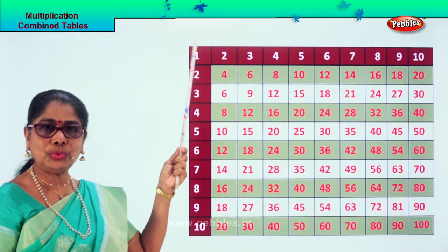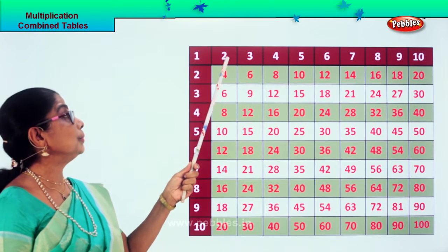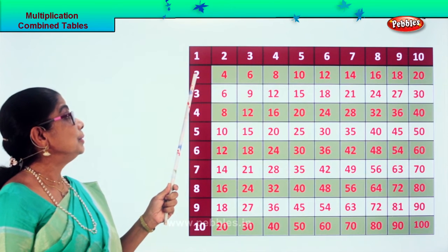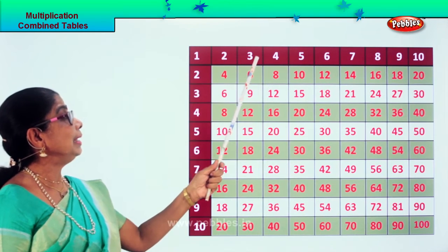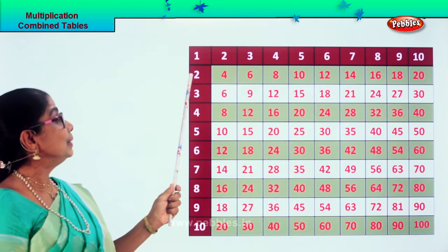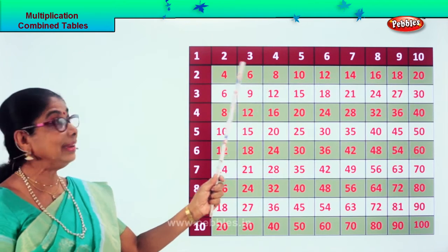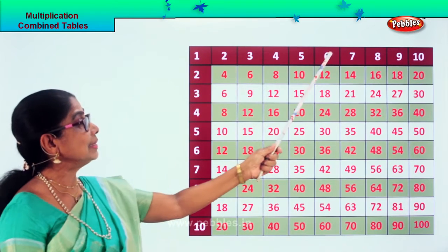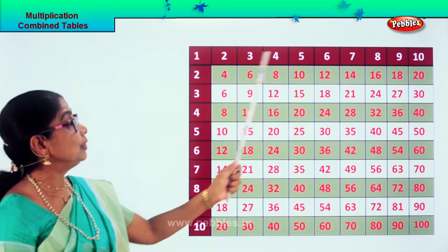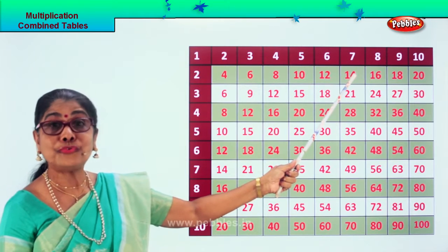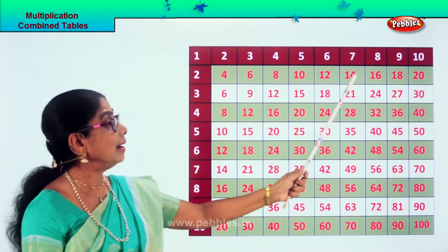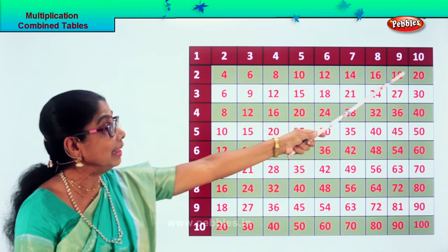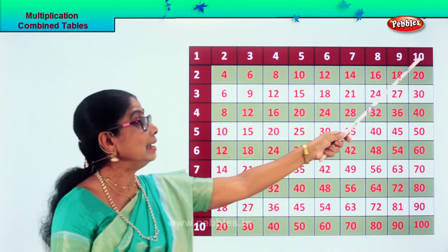Look carefully. Two ones are two. Two twos are four. Two threes are six. Two fours are eight. Two fives are ten. Two sixes are twelve. Two sevens are fourteen. Two eights are sixteen. Two nines are eighteen. Two tens are twenty.